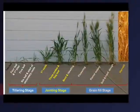Wheat and barley go through various stages of growth as the plant develops. Wheat and barley are grass plants, and as they develop early on, they go through three main stages.